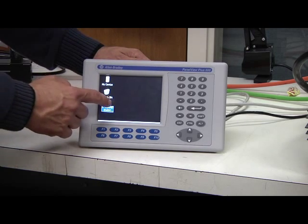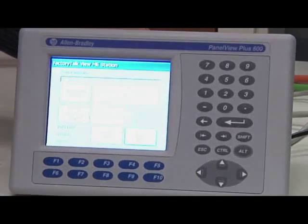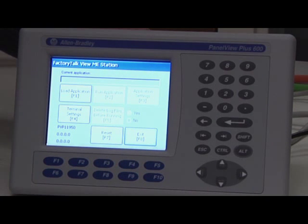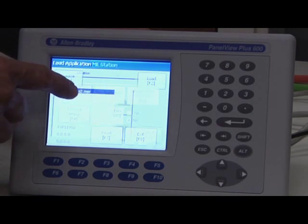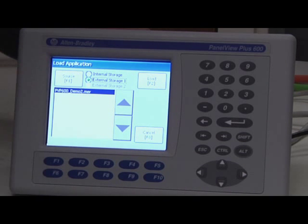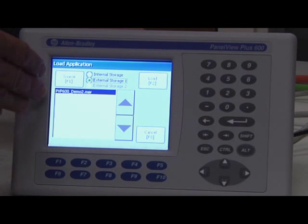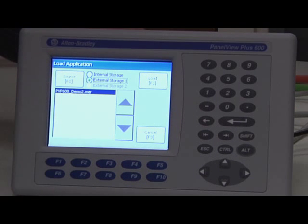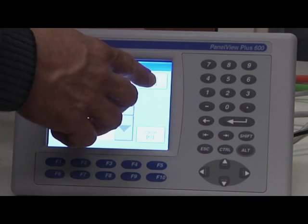Go to the configuration menu. Once at the configuration menu, select load application. From load application, select external storage. Your configuration file from the SD card will appear in the menu and click load.